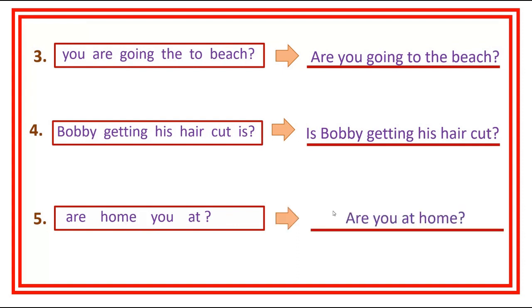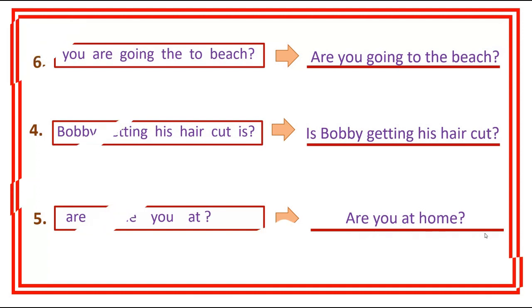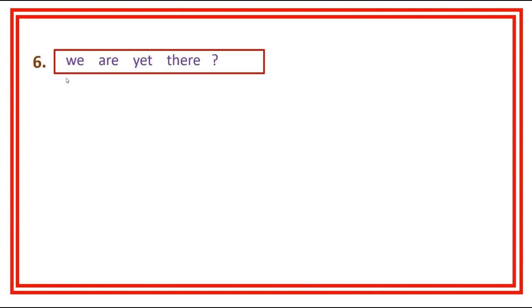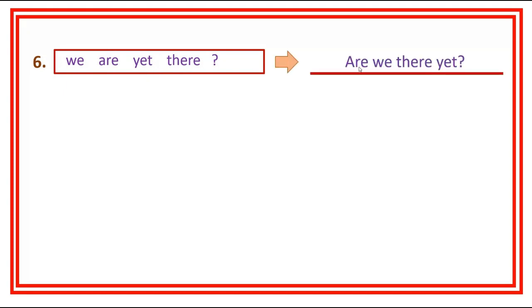Number four — answer: is Bobby getting his hair cut? Number five: are you at home? Answer: are you at home? Number six: we are yet there — answer: are we there yet?